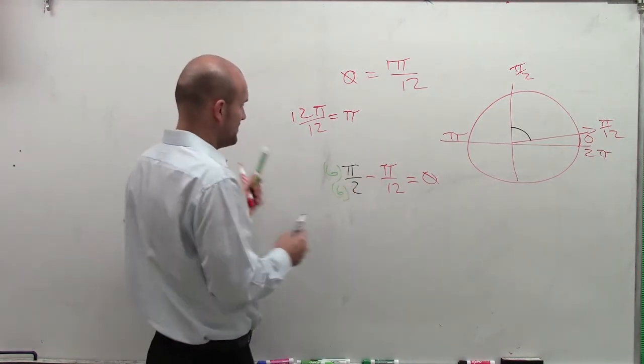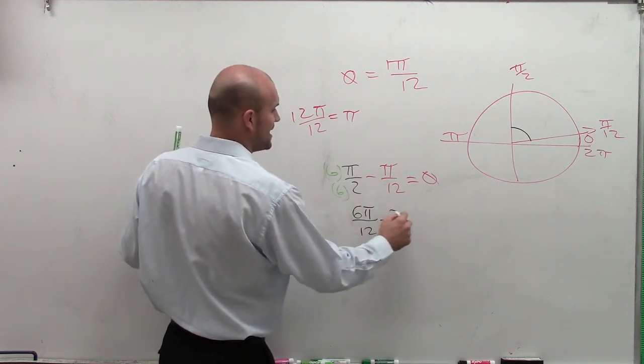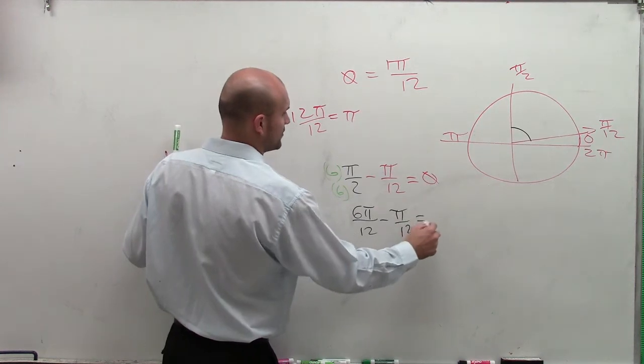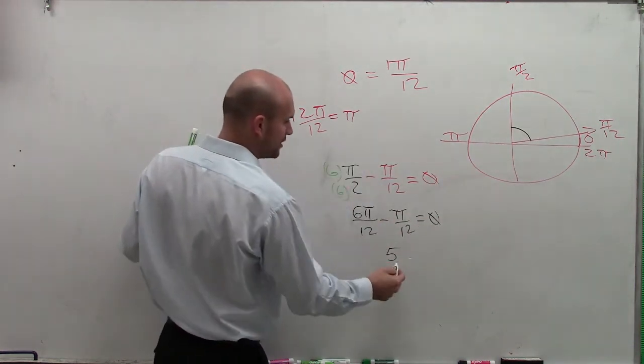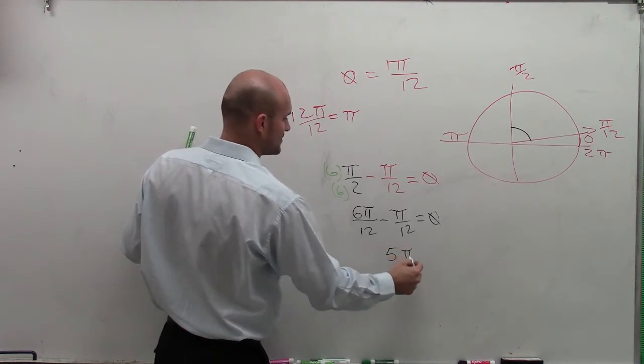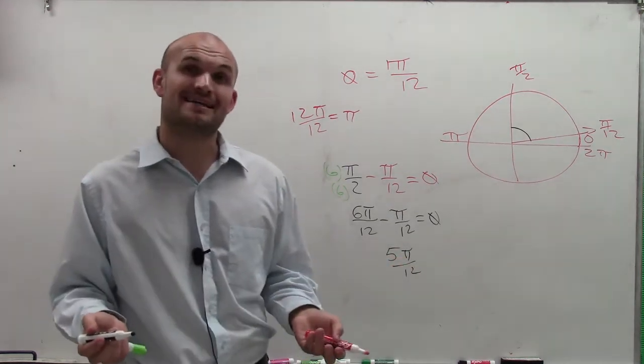So what I end up happening is having 6 pi over 12 minus pi over 12 equals theta. Therefore, the complementing angle to pi over 12 is going to be 5 pi over 12. So there you go. That's how you find complementary angles.